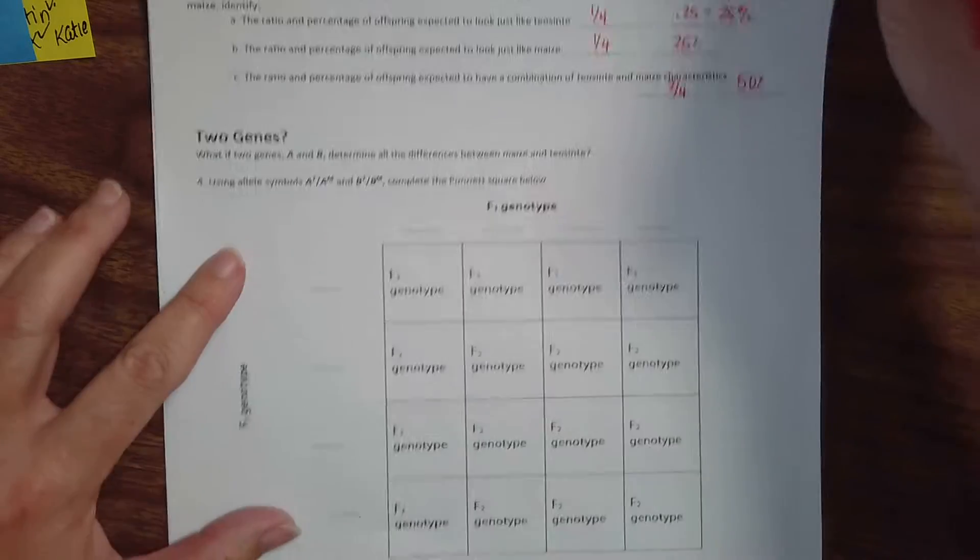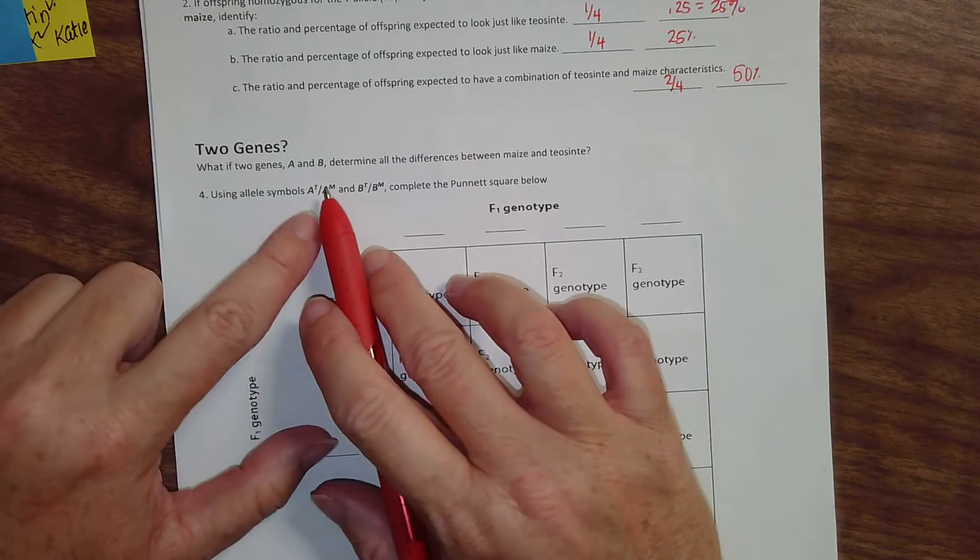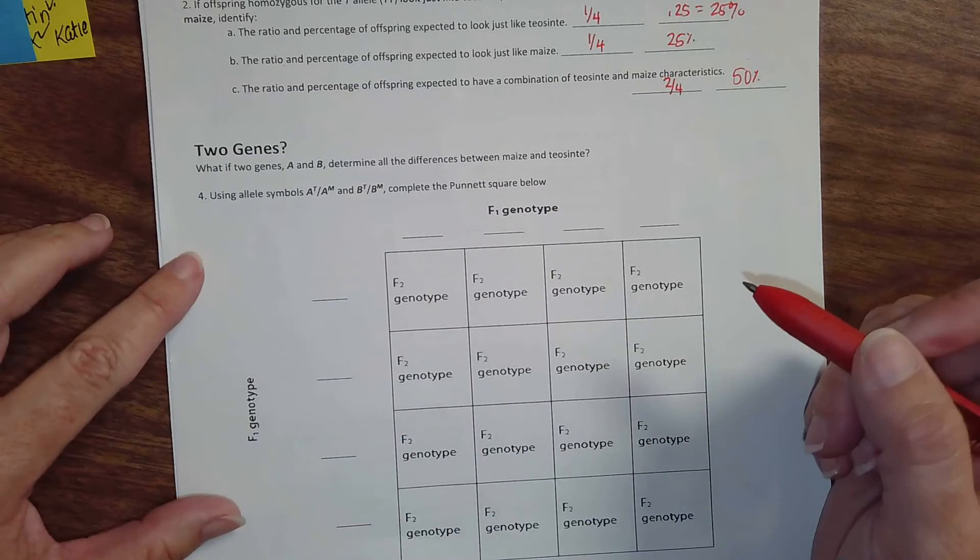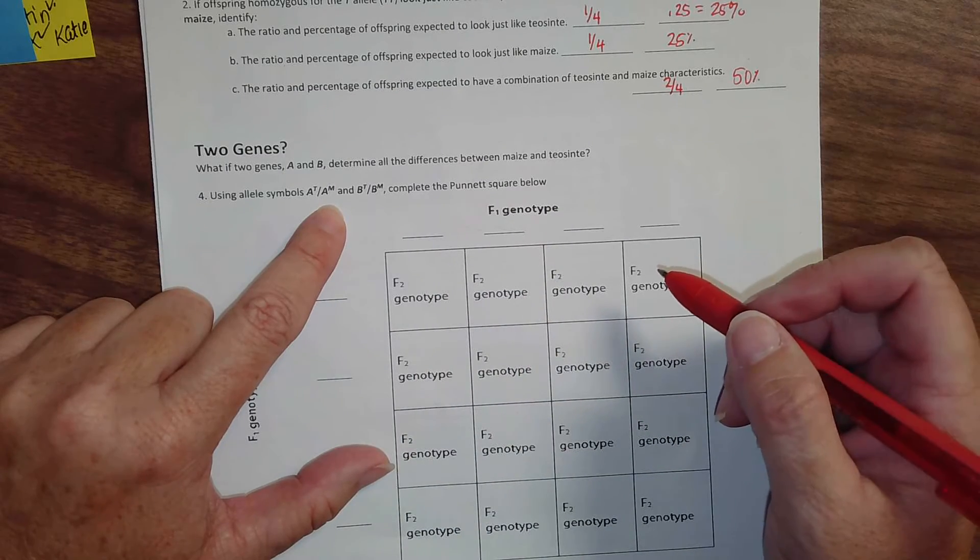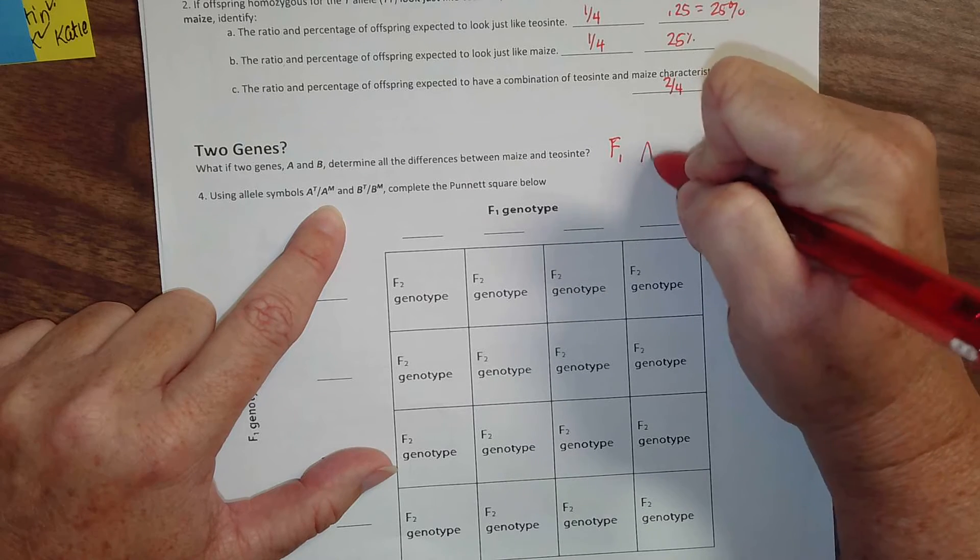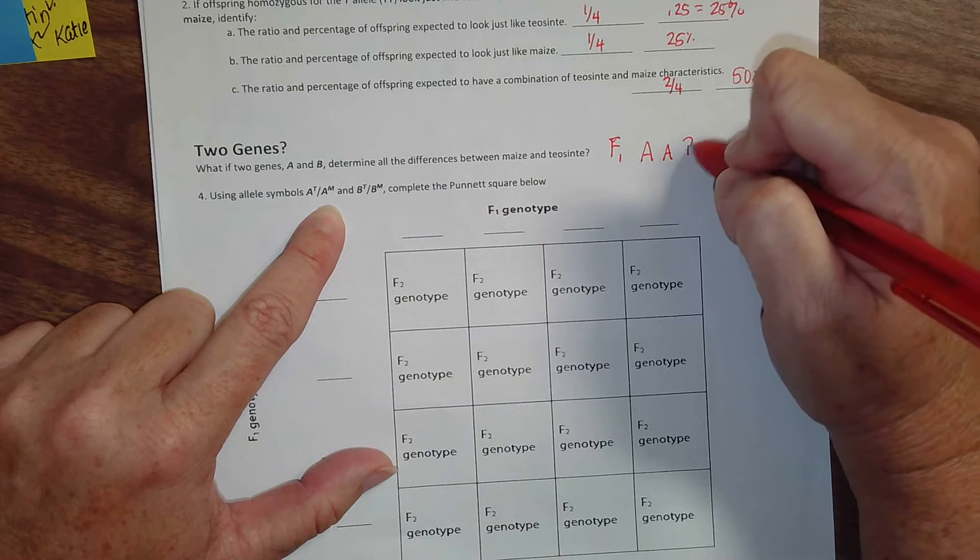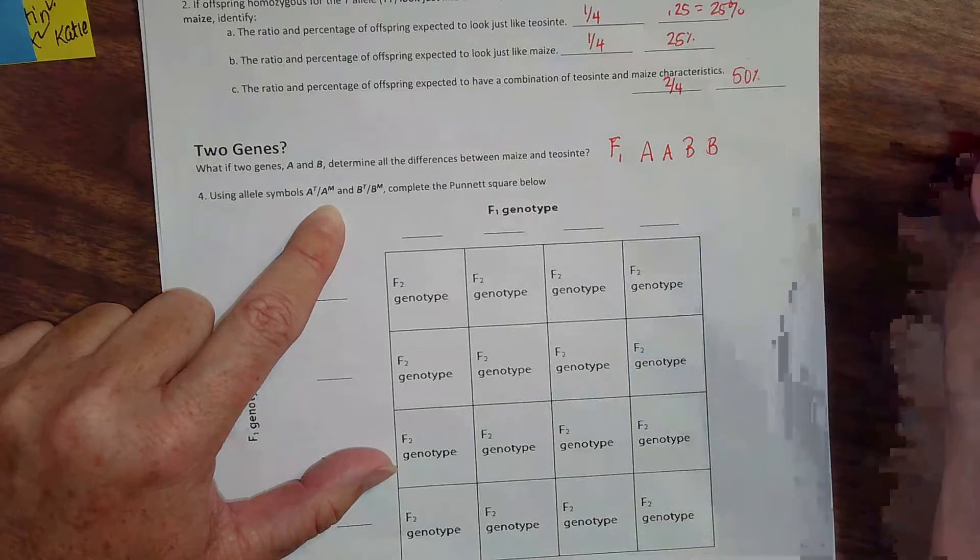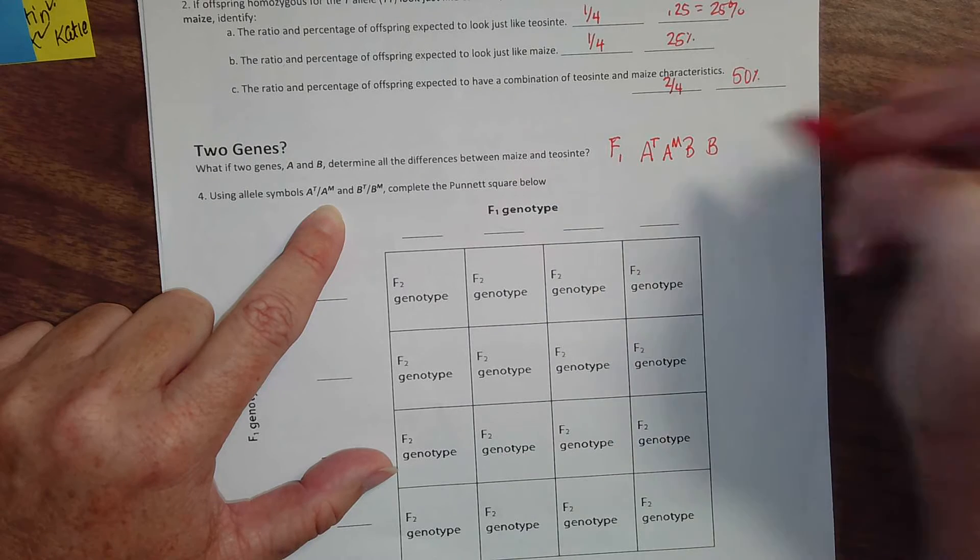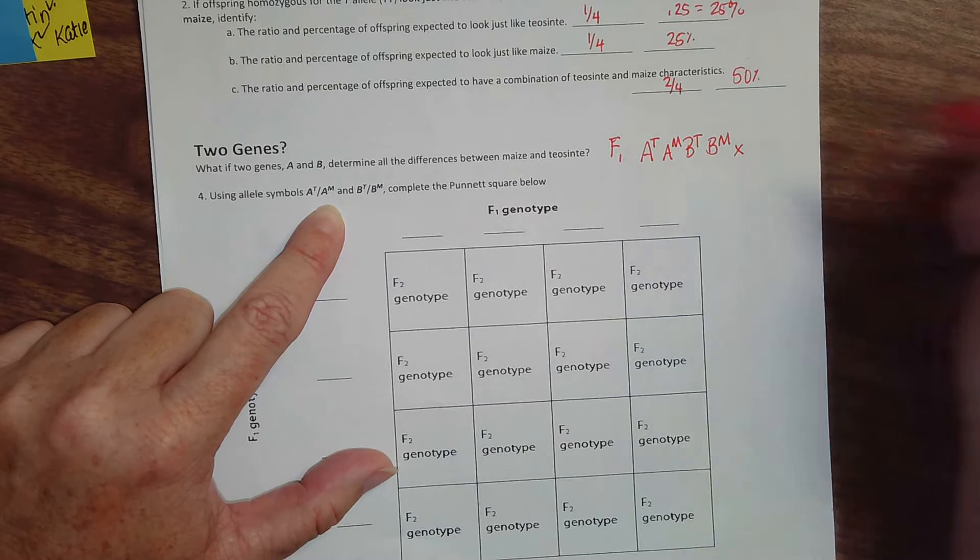Now, when you go down to here, and we're talking about what if two genes are involved, we need to distinguish these two genes as A and B. So now our heterozygous, or our F1 cross, is going to be gene A, and they're going to have two alleles for A and two alleles for B. Since it's heterozygous, you're going to be heterozygous for A, heterozygous for B. And you're going to cross that with itself.